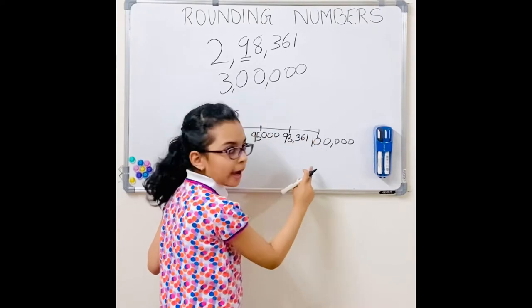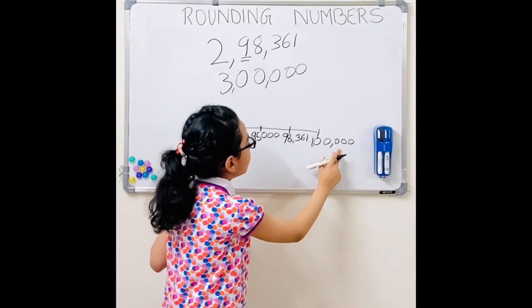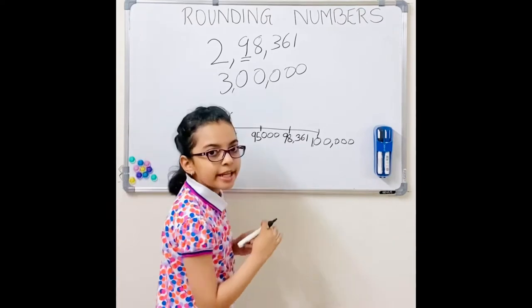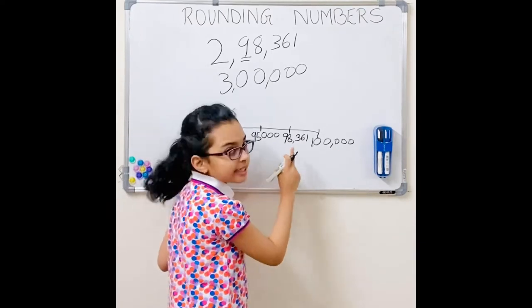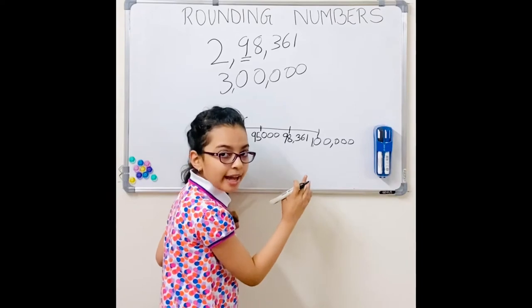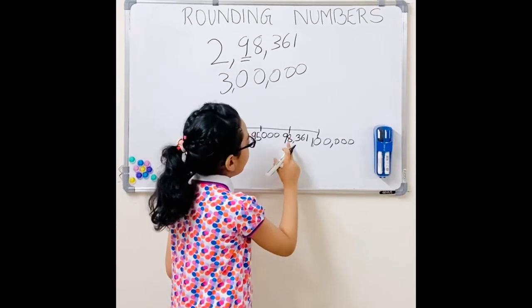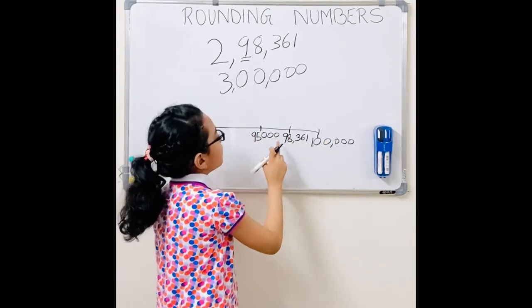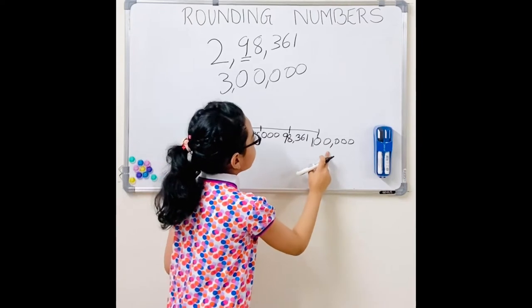It would round up. Like in the rhyme — 5, 6, 7, 8, 9 — we round up. So this one rounds to 100,000.